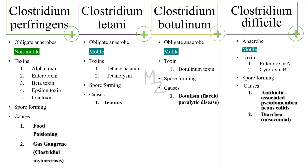All four species of Clostridia release certain toxins. For Clostridium perfringens, the toxins are alpha toxin, enterotoxin, beta, epsilon, and iota. For Clostridium tetani, the toxins are tetanospasmin and tetanolysin. For Clostridium botulinum, the toxin is botulinum toxin. For Clostridium difficile, there are two exotoxins: the first is enterotoxin A and the second is cytotoxin B.